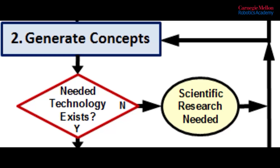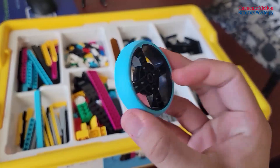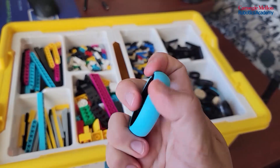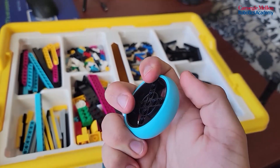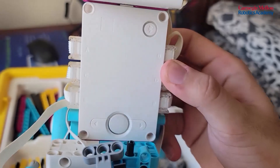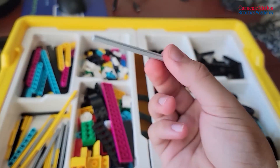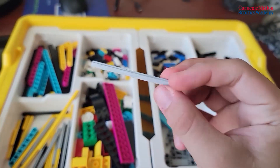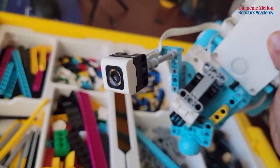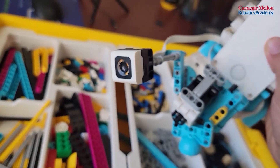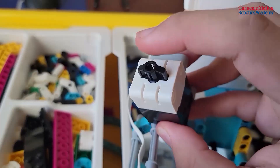Now let's talk about step two of the engineering design process: generating our concept. For us, this step involves picking the various components that we're going to use to accomplish our criteria and constraints. We have the light matrix hub, some all-terrain wheels, different types of rods for our sensor boom, and then finally the sensors themselves.